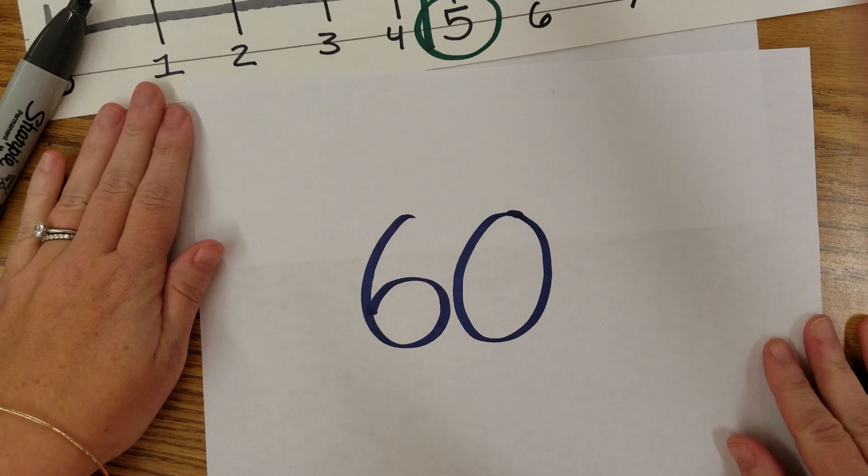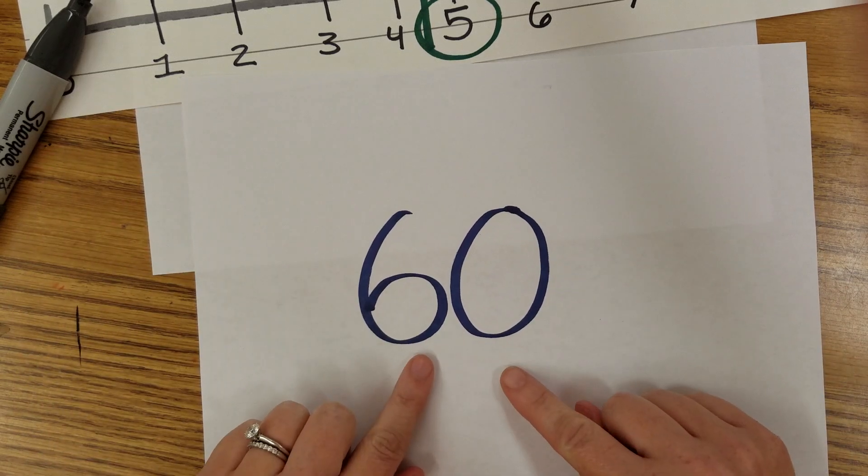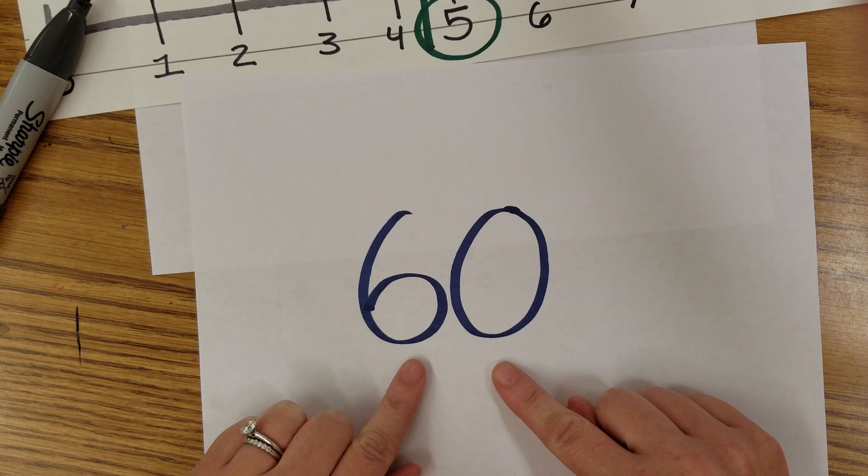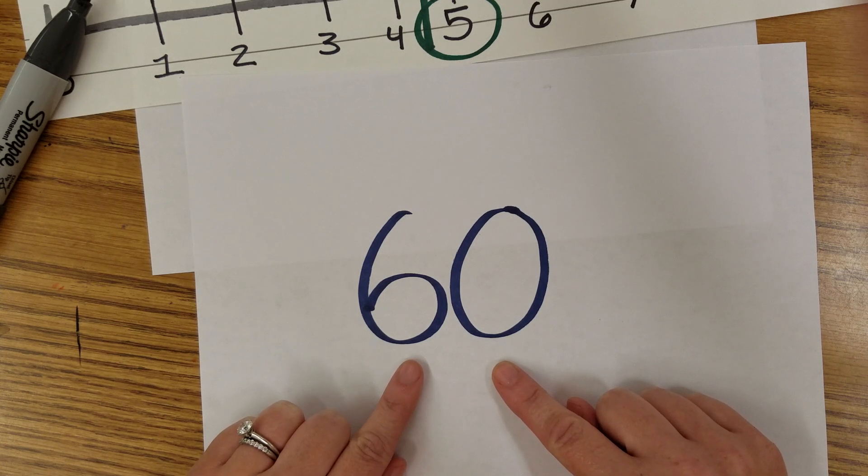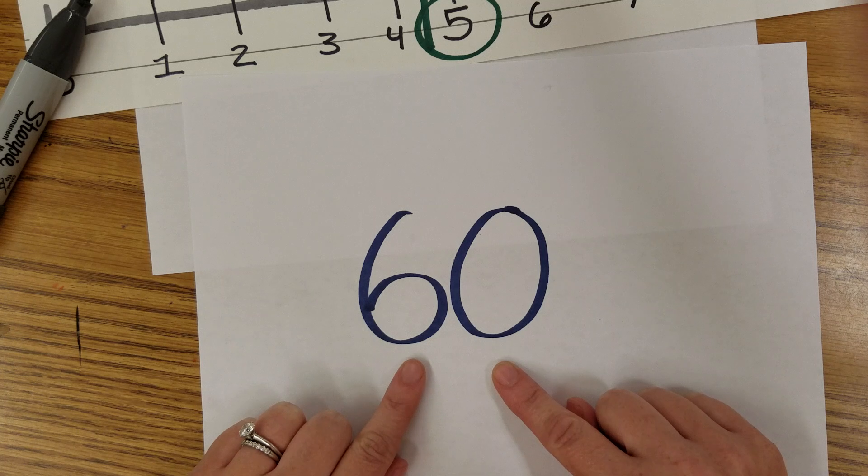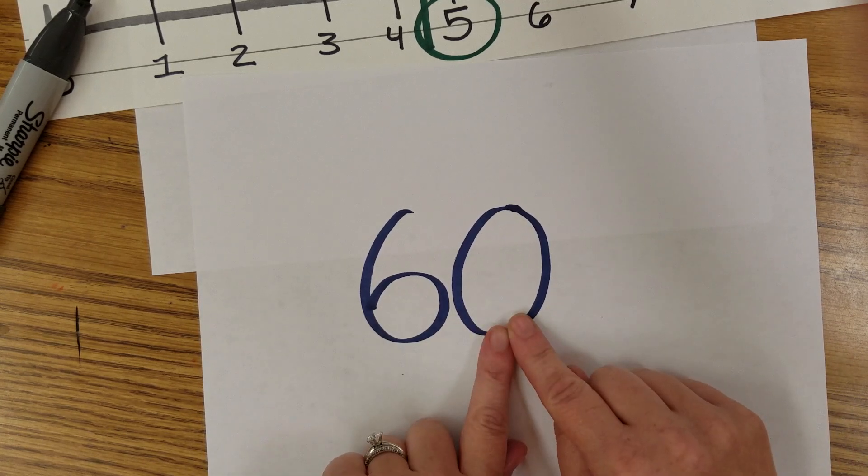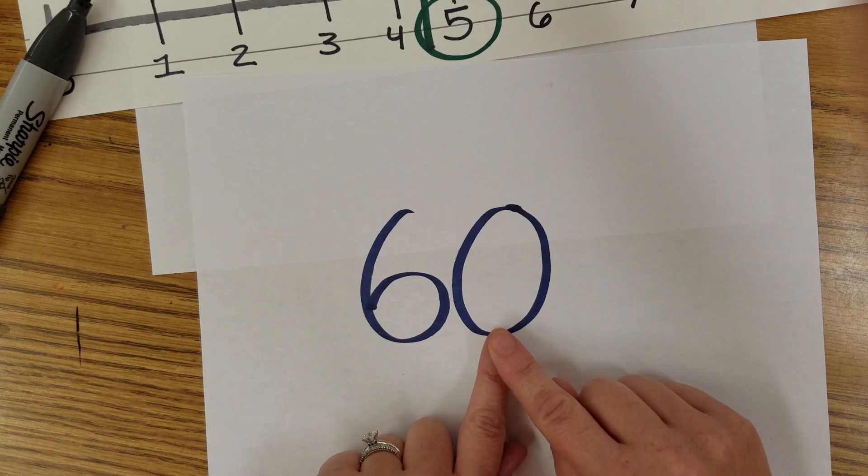Here's another one. This one kind of tricks kids when they see round sixty to the nearest ten. Sometimes people want to go down to fifty or up to seventy, but you know what? That's already rounded to the nearest ten. Sixty is already the nearest ten. You just leave it where it's at. When there's a zero in the ones, it's already rounded.